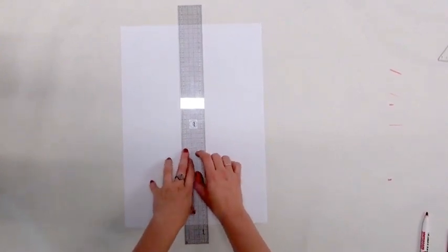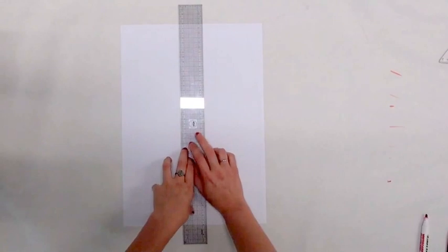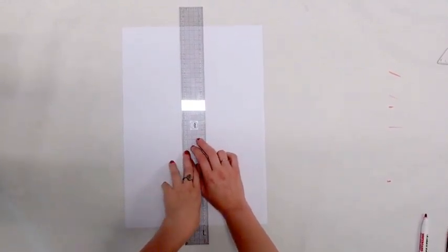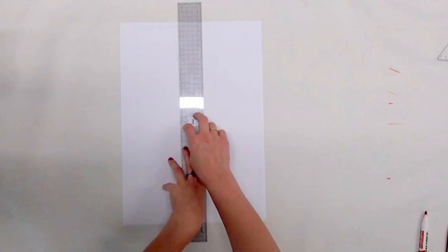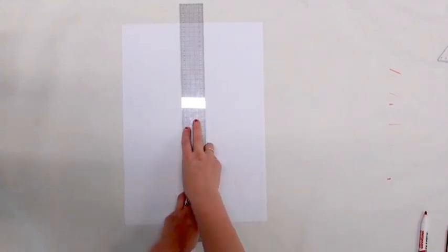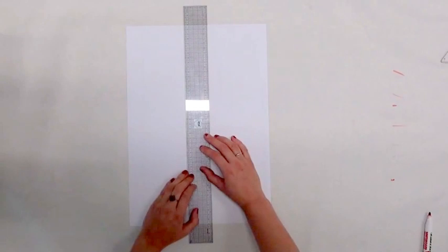However, what we use it for predominantly is adding seam allowances. It's not a set square, so whenever you want to create a 90 degree angle, you should be using the set square from the previous videos.